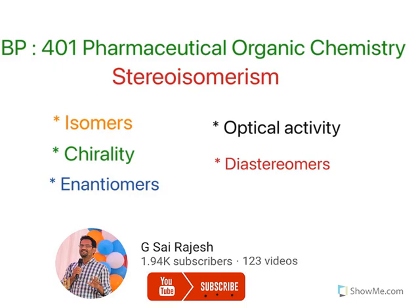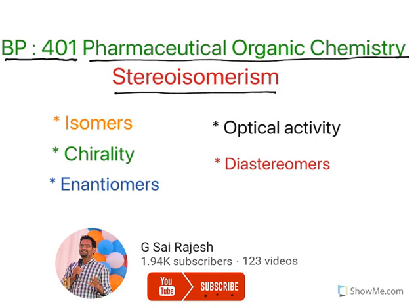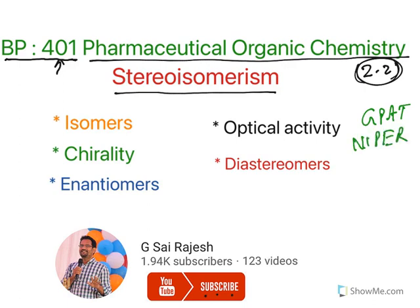Hello everyone, welcome to the class on Stereoisomerism. This topic has been made according to the PCA common syllabus of BP401 Pharmaceutical Organic Chemistry. This will come in second year, second semester, or overall it is a fourth semester topic. In this video series I will be making organic chemistry according to this syllabus. But these basics are important for GPAT as well as NIPER. Especially in NIPER, the majority of questions are coming from organic chemistry.